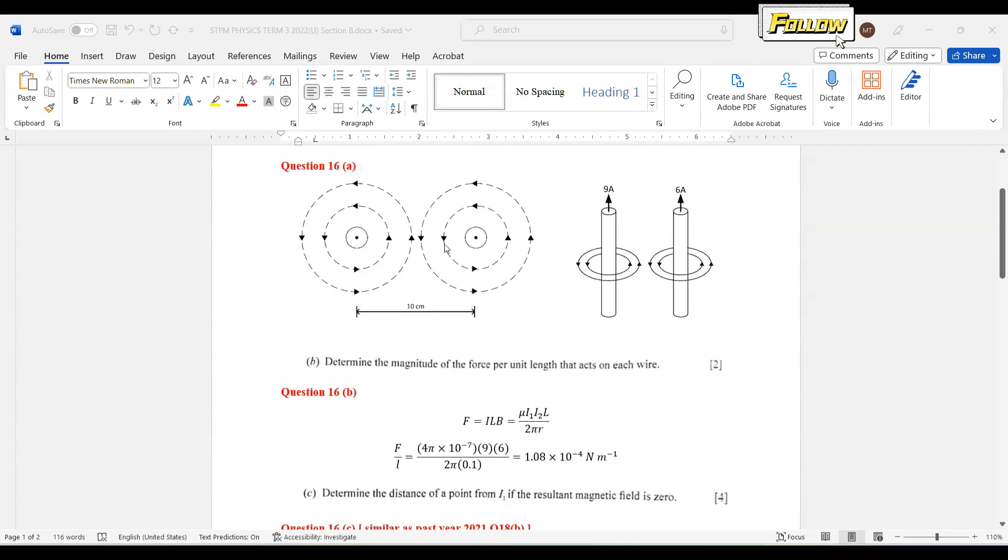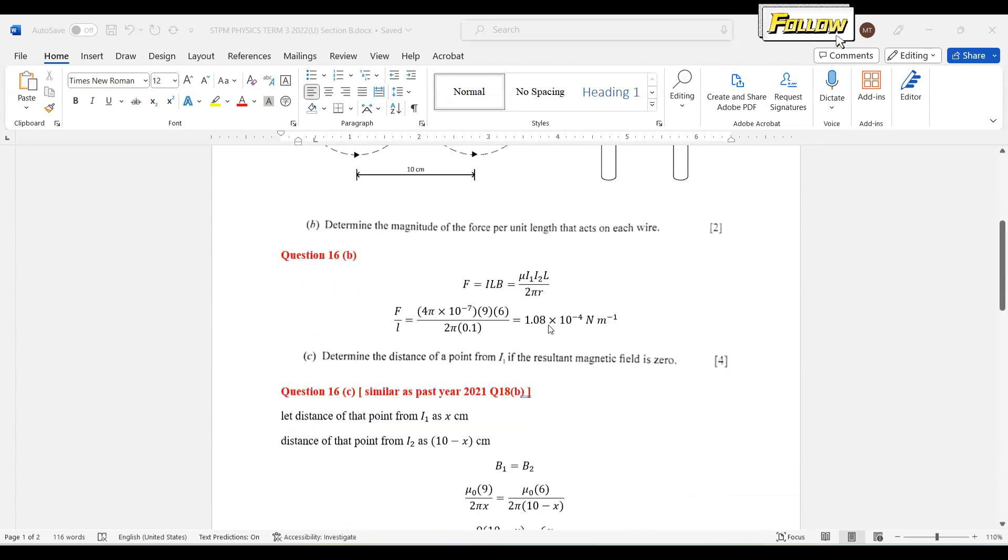As I mentioned, the magnetic field is against each other, so we can expect there is a point that has 0 resultant magnetic field. Let the distance of that point from i1 be x centimeter. So the distance of that point from i2 is 10 minus x.